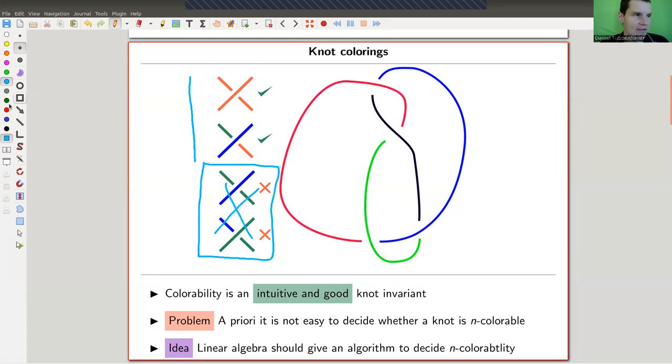And then there was an example of the trefoil, of the figure eight knot. You can't color it with three colors, but it's not quite obvious to see. You need to play around a little bit, just try all possibilities, and trying all possibilities is usually not the best way of doing something. I'm always using the brute force approach, but it might not be the best one.